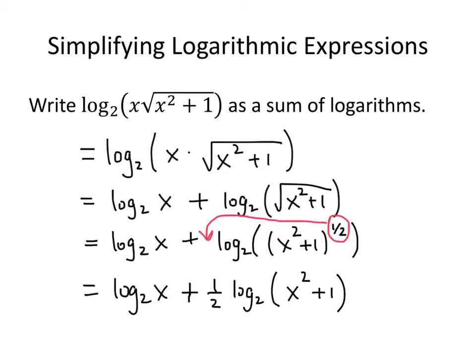You might be thinking: is there a way to break up the log base 2 of x squared plus 1 — maybe as the log of x squared plus the log of 1? It turns out the answer is no. When we have a sum inside a logarithm, this can't be simplified any further. We have to be really careful not to mix up our log rules. When you have a product inside the logarithm — something times something else — you get the sum of the individual logarithms. But when you have a sum inside a logarithm, you can't break that up.